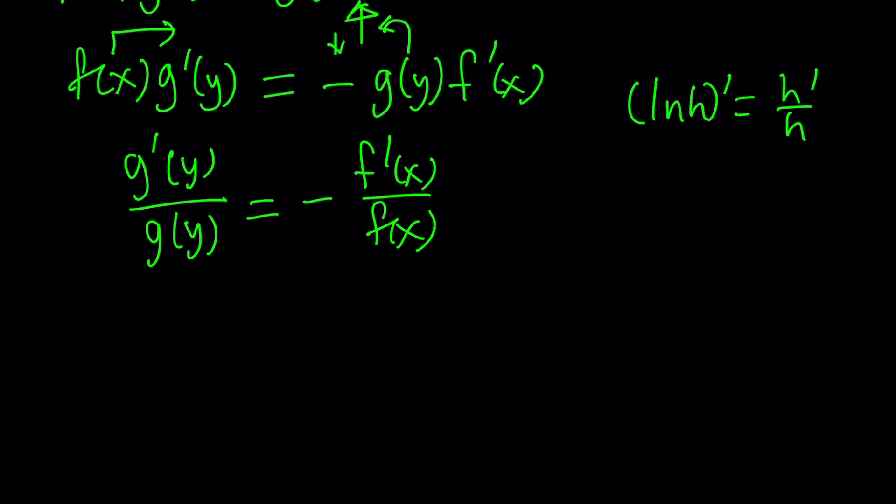Here's the most important part to understand when dealing with equations that have separable solutions. Once you separate the variables, think about it: g prime of y divided by g of y is a ratio of two functions of y — a rational function of y. The right-hand side is a function of x. So how can a function of y equal a function of x? Something that contains neither x nor y needs to be a constant. Whenever you have the scenario where a function of y equals a function of x, always set them equal to a constant, and then everything unfolds from there.